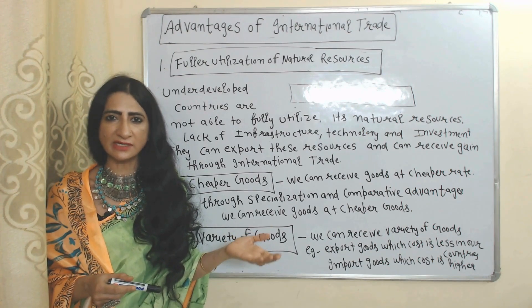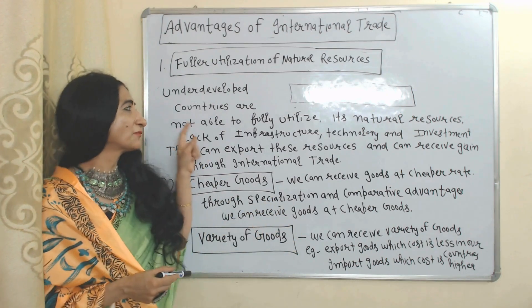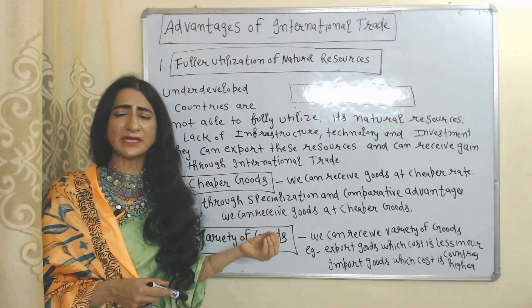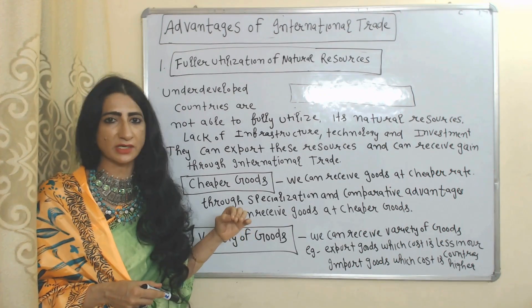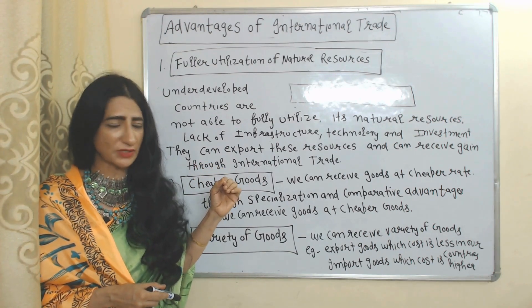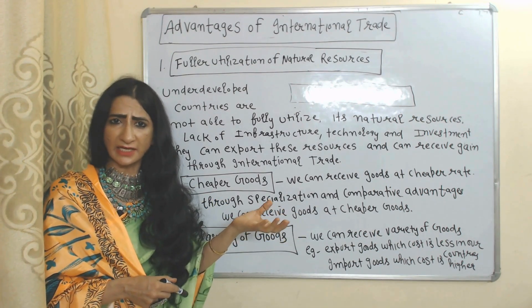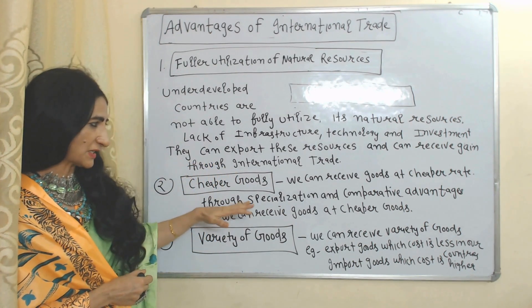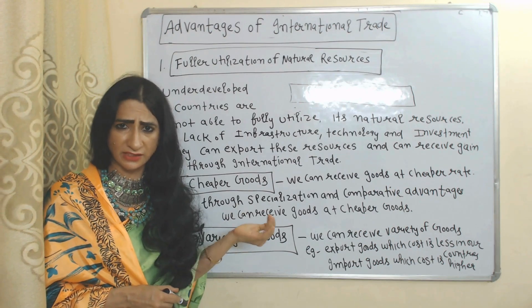Now we are going to talk about advantages of international trade. International trade means exchange of goods, services, and capital between countries. The first advantage is fuller utilization of natural resources. Sometimes underdeveloped countries are not able to fully utilize their natural resources because of lack of infrastructure, technology, and investment. They can export these natural resources to developed countries and gain through international trade.